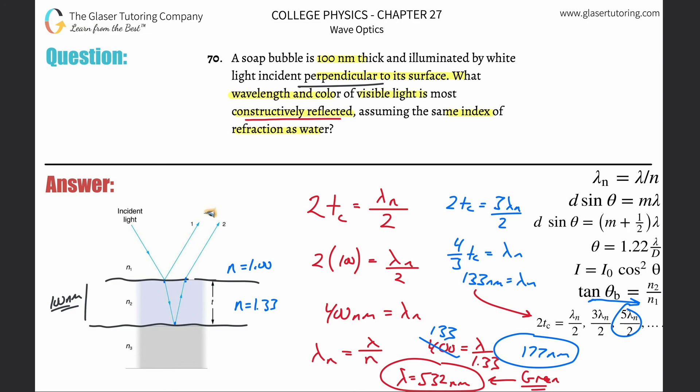The other way the question could have been phrased is, is there any visible light that is constructively reflected and you would approach the problem the same way. You got to figure out the patterns of the wavelengths here and then just see if any of them will fall eventually into the visible spectrum. And then obviously there might be ways to kind of shortcut that or reverse engineer the problem. There's many ways to solve these problems. Anyway guys, thanks for tuning in. Hopefully that helps. I will see you in the next video. If you can like and subscribe, we appreciate it. Thank you.